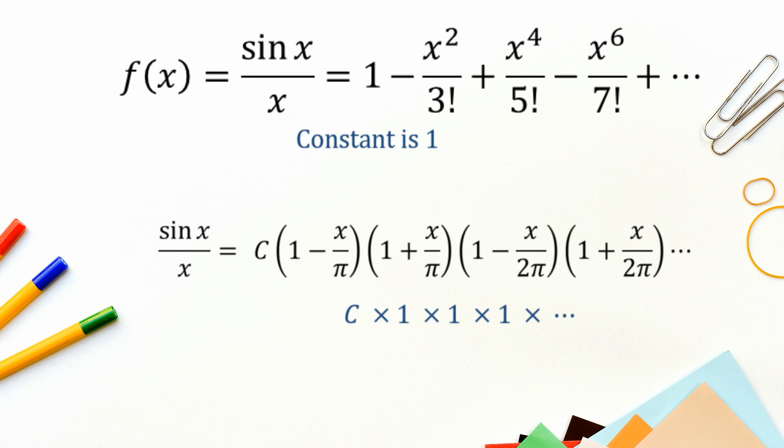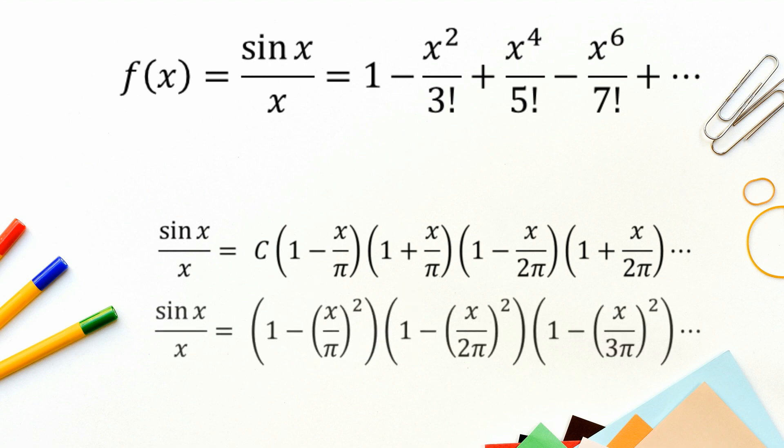the constant is 1. If we look down the bottom, if we multiply all this out, the only way we can get a constant is that we use the c and then we take 1 from each bracket. So we get c times 1 times 1 times 1 on forever, which equals c. So the two must be the same. At the top we've got 1, down the bottom we've got c and so c must equal 1. The next thing we can realise is if we look at the first two brackets, then that's the difference of squares. So we can express it as 1 minus x on pi all squared, and then the next one will be 1 minus x on 2 pi all squared, etc. So we have this.